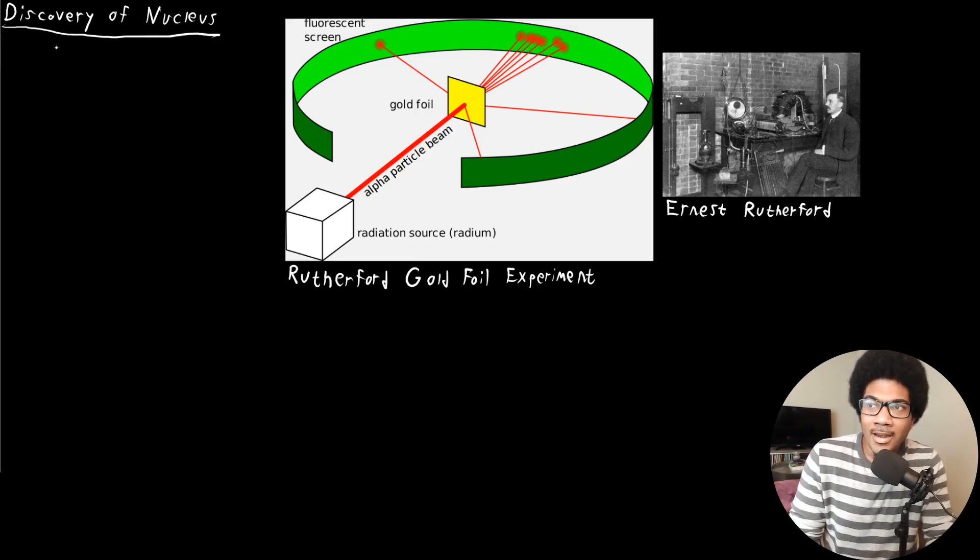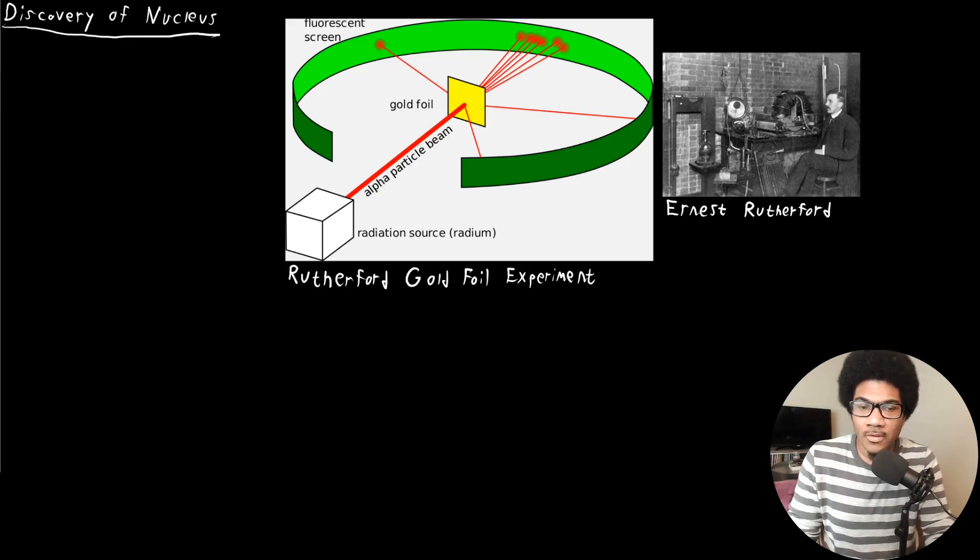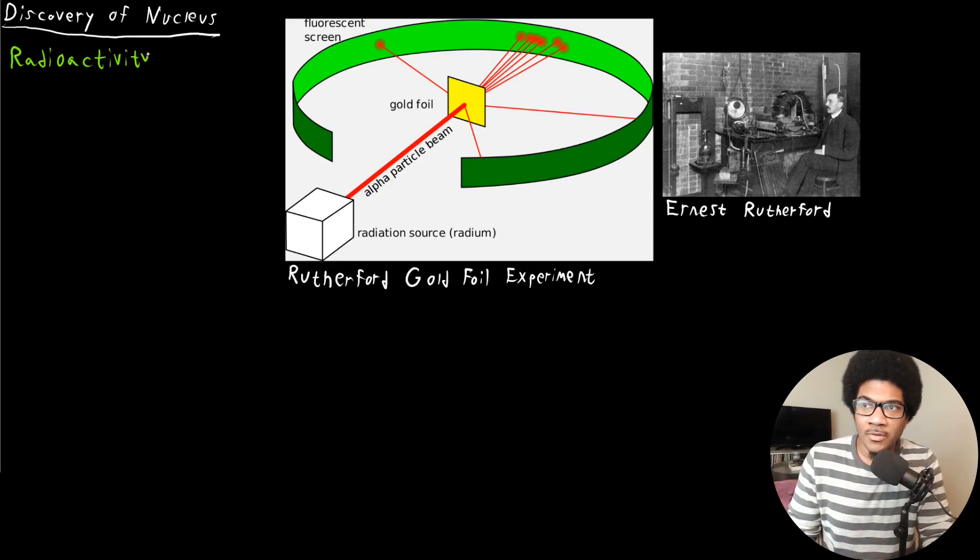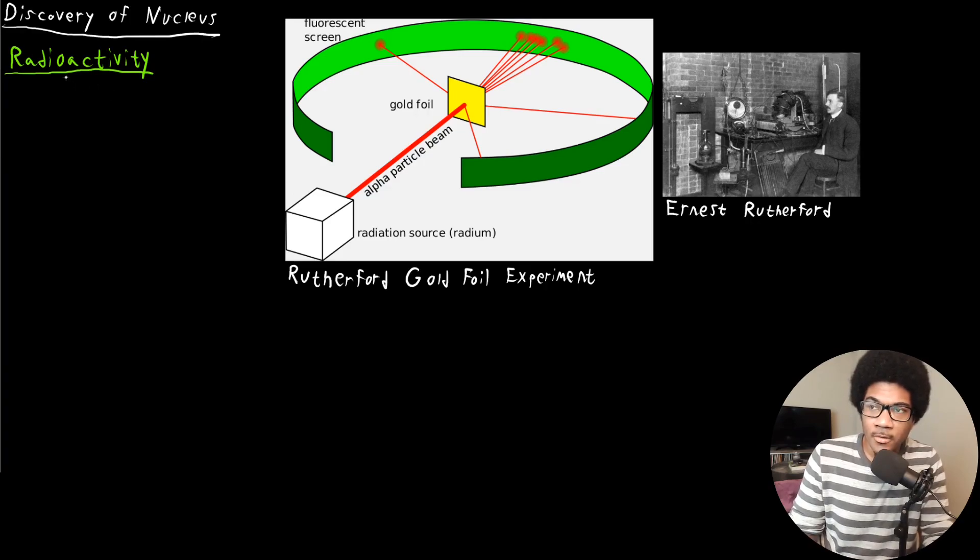The discovery of the nucleus came shortly after Thompson's experiment. So we're talking early 1900s. But before we discuss any of the nuts and bolts of the experiment that led to the discovery of the nucleus, it's important to understand a little bit about radioactivity. And my goal here is not to go deep into radioactivity. That's something that we'll discuss a little bit later in the course. But for now, just to have a working understanding of what we're talking about.